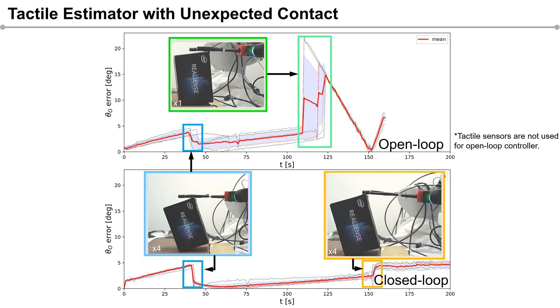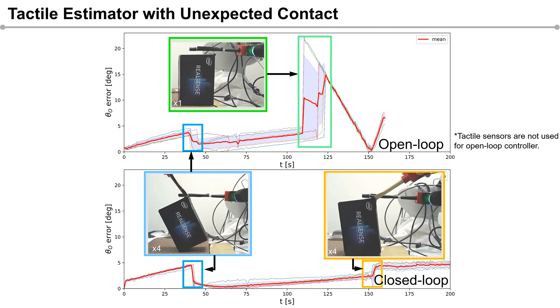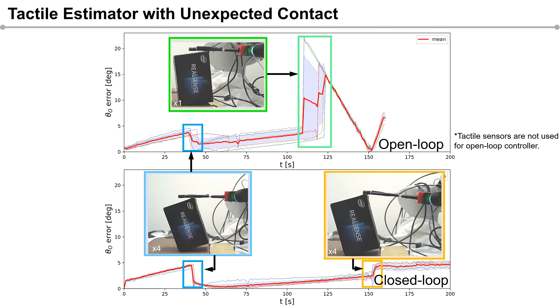Next, we discuss the tactile estimator performance. Here, we show time history of error of the estimated object angle. The error is defined as the difference between the ground truth and the estimated value. Our estimator when run with the MPC controller can always estimate the pose of the object while the open-loop controller fails as it loses contact with the object.